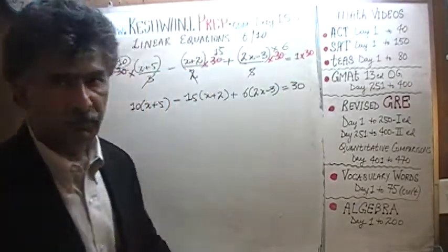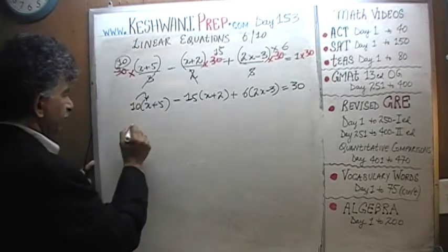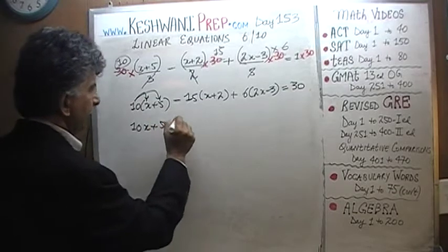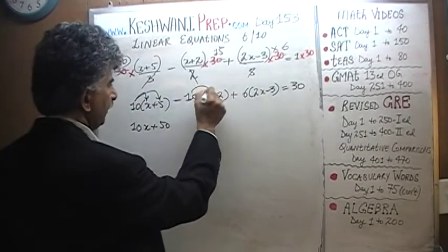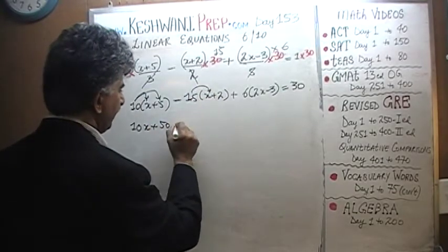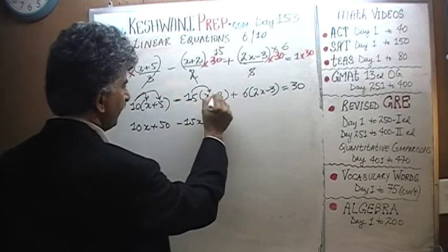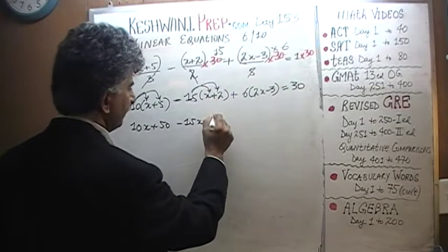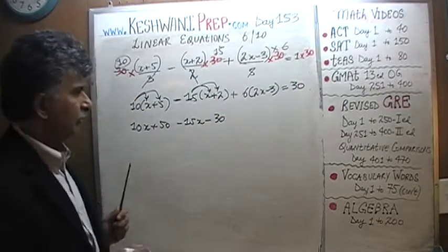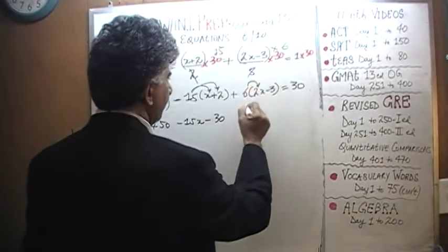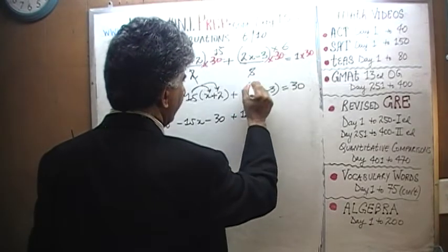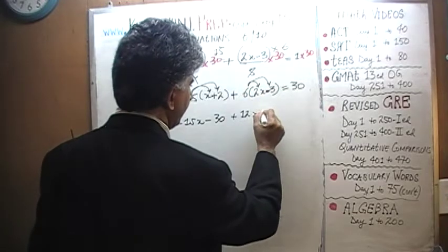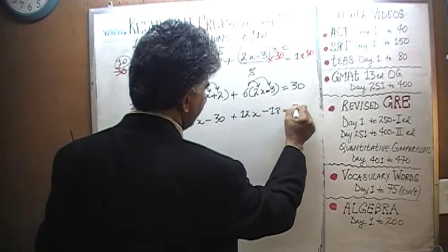That's it — the rest is downhill. 10 times x is 10x, 10 times 5 is 50. Here is a minus sign — pay attention. Negative 15 times x is negative 15x, and negative 15 times 2 is negative 30. This is where you have to slow down: 6 times 2x is 12x, and positive 6 times negative 3 is going to be negative 18. And this has to equal 30.